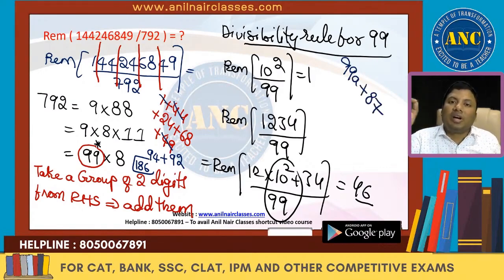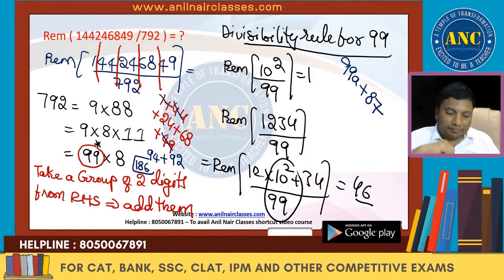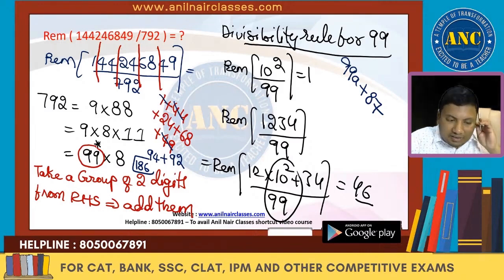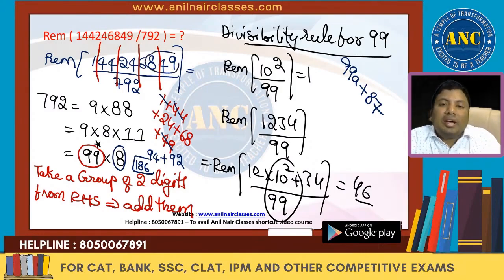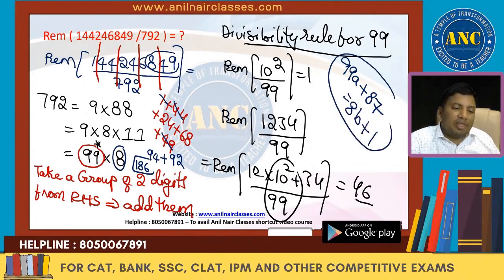To recap: divisibility rule of 99 — start from the right-hand side, take a group of two digits and add them. 49 + 68 + 24 + 44 + 1 = 186. 99 ones are 99, so remainder is 87. For divisibility by 8, the last 3 digits must be divisible by 8. Last 3 digits are 449: 8 × 56 = 448, remainder is 1.